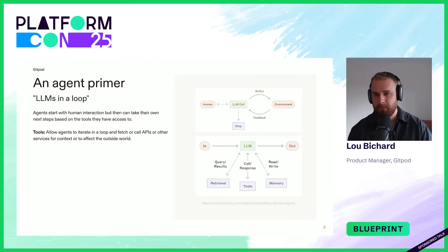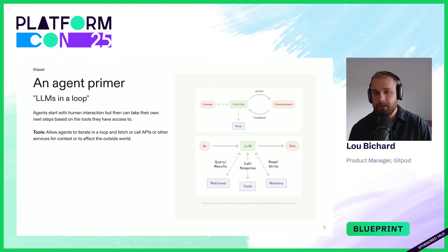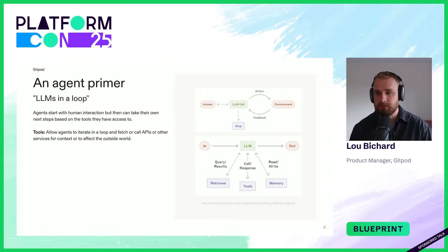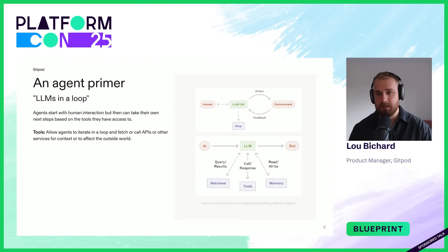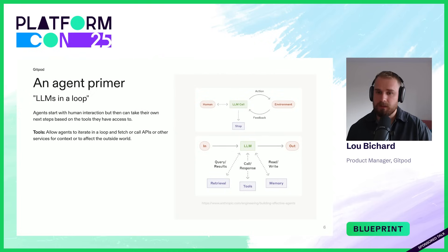Let's do a quick agent primer. 'Agent' is certainly a loaded term. At a primitive level you can think of an agent as an LLM in a loop — a large language model iterating in a loop. What makes agents so powerful is access to tools. A tool can be a request to fetch data, an API call that makes some change in the outside world, or something that pulls in data to make decisions. The agent iterates in a loop until the task is complete. This unlocks use cases from writing software to completing operational tasks, but it also brings challenges that platform engineers now need to think about.